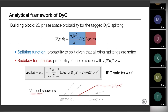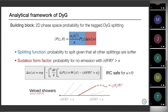The Sudakov form factor is just the exponentiation of a non-emission factor where you have the splitting function with a veto condition — a Heaviside function — that ensures you are vetoing emissions with values larger than your kappa. This is used in what is called a veto shower, and everything is inspired by this approach. The Sudakov form factor is infrared and collinear safe only for a larger than zero. You can see this very easily: if a equals zero, there is nothing to regulate the theta integration and you would have a collinear divergence — no infrared and collinear safety.